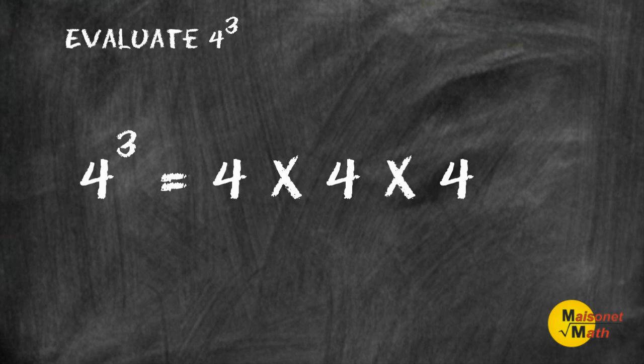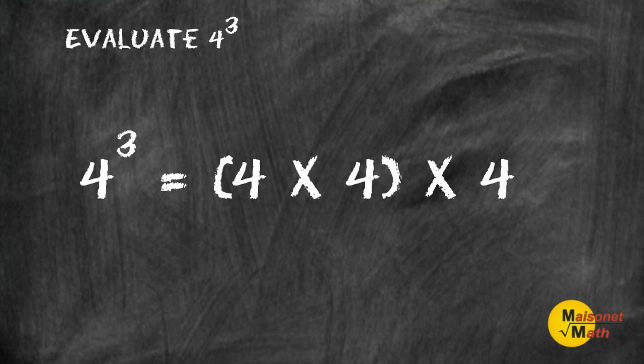Next we are going to multiply the first two numbers in this expression, or 4 × 4, and that gives us a product of 16. Now we must multiply 16 by that last 4 at the end of our expression and that would give us a product of 64. So 4 to the third power is equal to 64.